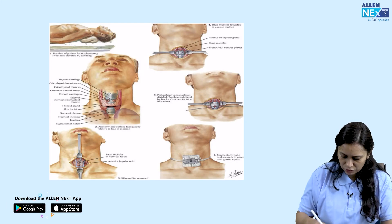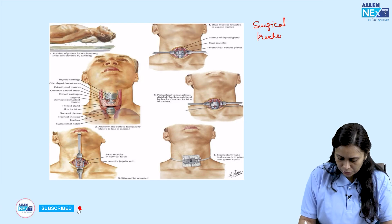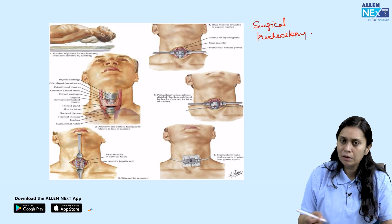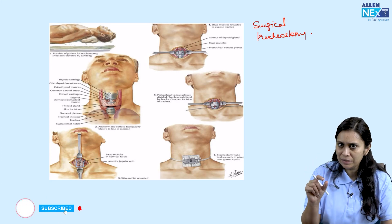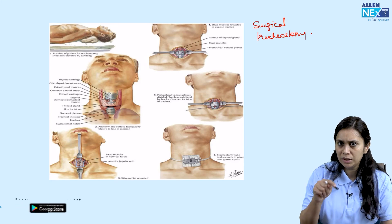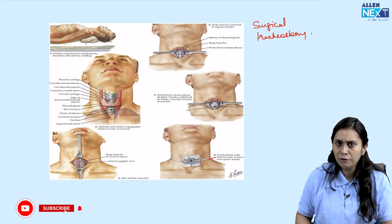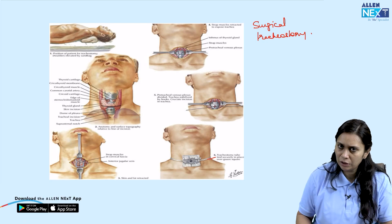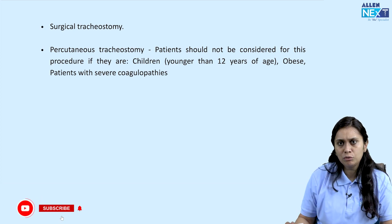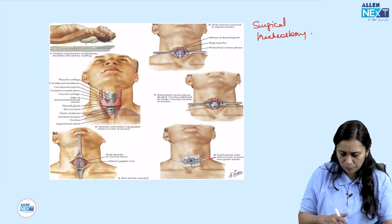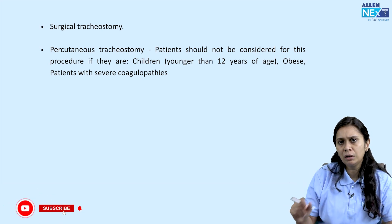Tracheostomy can be performed by two methods. The image demonstrates surgical tracheostomy, in which step-by-step dissection of all layers is done, the trachea is visualized, a hole is created between the second and third tracheal rings, and the tube is inserted and fixed. A cuffed tracheostomy tube is always used when placing a patient on mechanical ventilation.